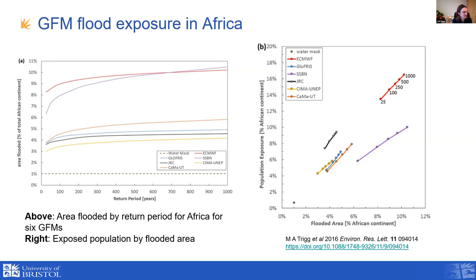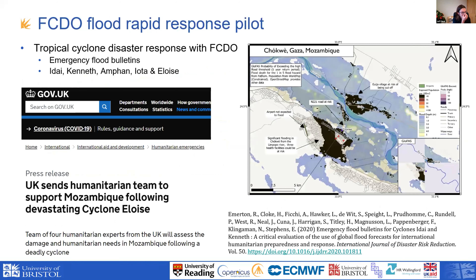So clearly there's a lack of sensitivity to return period. We suspect that's because the low return period estimates are far higher than what's happening in reality. This got me thinking about why this is, and more recently we've had examples of why these small return periods are really important. I've been working with the Foreign Commonwealth Development Office here in the UK, providing them with data about tropical cyclones.